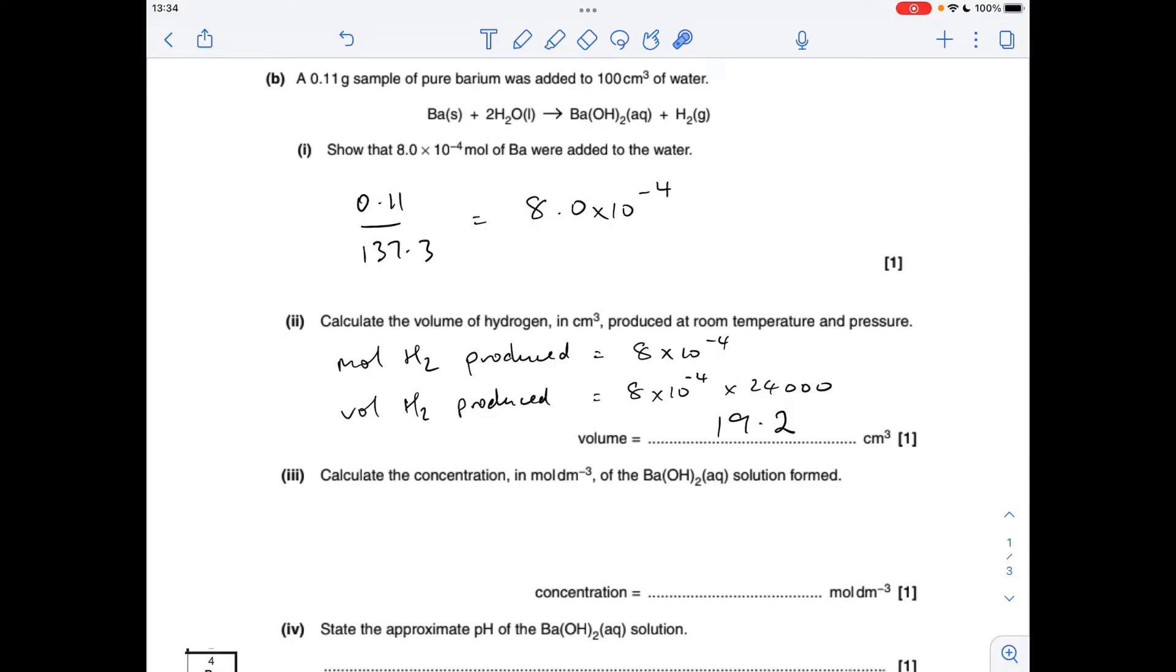Next part, we've got to calculate the volume of hydrogen in centimeters cubed produced at room temperature and pressure, RTP. The moles of hydrogen made will be the same as the moles of barium used from the one-to-one ratio, so we'll get the same number of moles of hydrogen as we had barium. Volume of hydrogen is therefore that many moles multiplied by 24,000, gives us the centimeters cubed value, which comes out at 19.2.